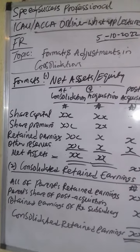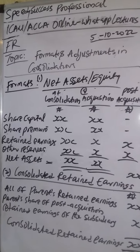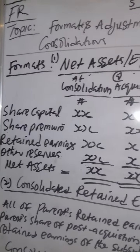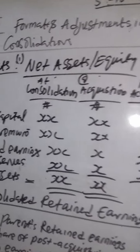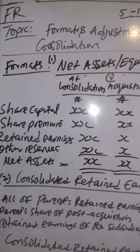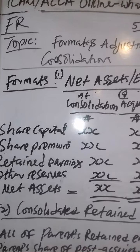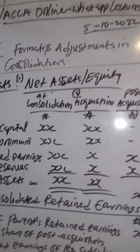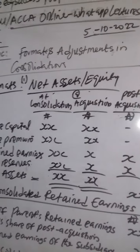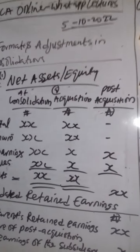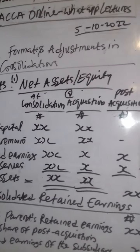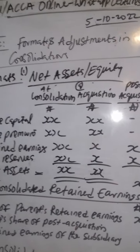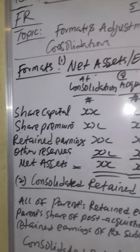In preparing a consolidated financial statement, one of the things we must do is determine control. The first adjustment we are going to do is to determine net asset or equity at acquisition and at consolidation. This is the format: post-acquisition, acquisition, at consolidation.